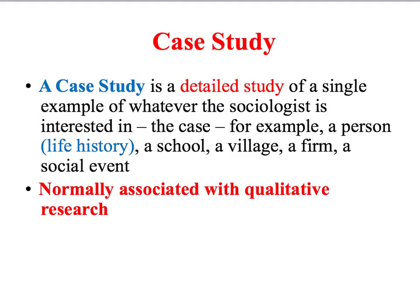Another type of research design is the case study — a very detailed study of a single example of whatever the sociologist is interested in studying. That could be a person, an institution such as a school, a place, or a social event. Ethnography, which we've mentioned earlier, is a case study of a particular social group. And because case studies are detailed, they are normally associated with qualitative research methods.